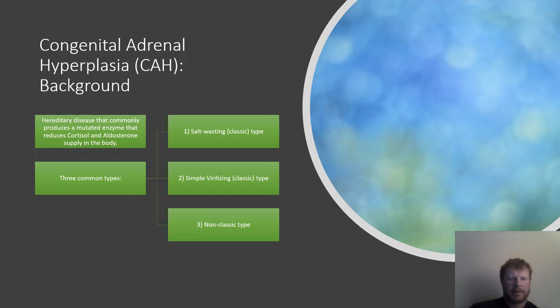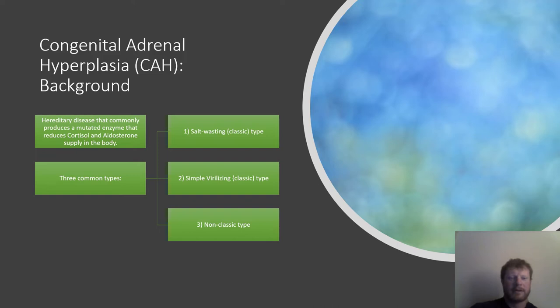It's a hereditary disease that commonly produces a mutated enzyme called 21-hydroxylase. That enzyme helps produce cortisol and aldosterone in the body. The most common form of this disease comes with 21-hydroxylase deficiency, so you'll have reduced cortisol and aldosterone. The three most common types are: the salt-wasting classic type, which is the most serious; the simple virilizing classic type, which is more moderate; and the non-classic type, which is the least severe.